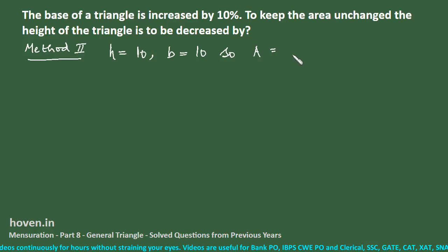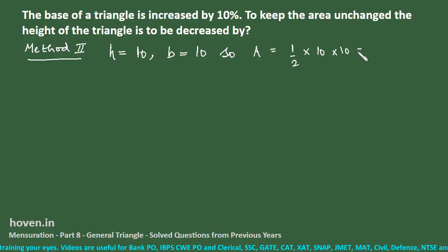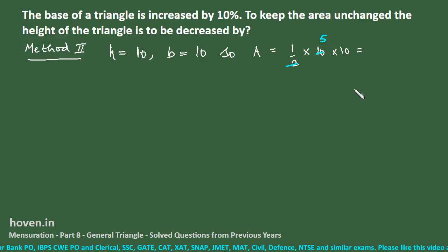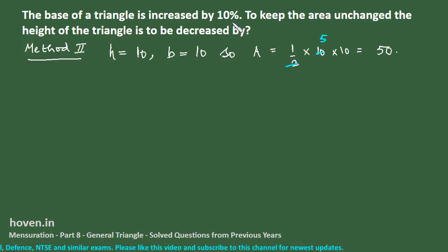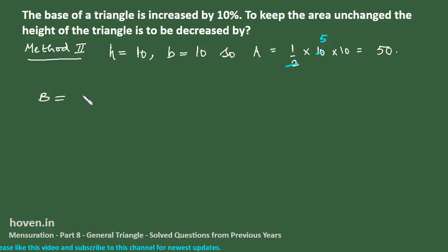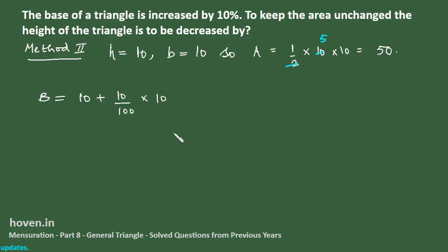The initial area is equal to half × base × height = half × 10 × 10 = 50. Now the base is increased by 10%, so the new base B = 10 + 10% of 10 = 10 + 1 = 11.